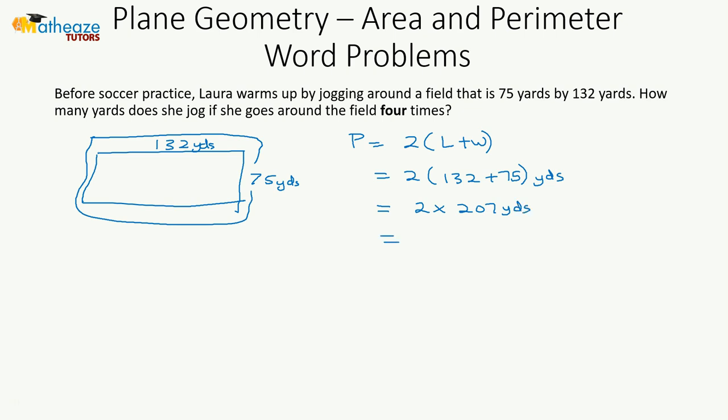But it's important to note here that she does 4 laps. She jogs around the field four times, so the number of yards she will travel is 414 multiplied by 4, which is going to be 1,656 yards.